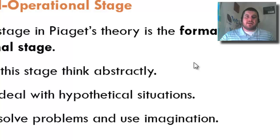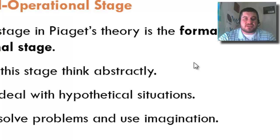The last stage, from age twelve and on, is the formal operational stage. People in this stage can think abstractly, deal with hypothetical situations, and solve problems using imagination — this is really when you begin to think like an adult. For example, given the rule 'if you hit a glass with a feather, the glass will break,' and told 'Don hit a glass with a feather,' a child in this stage concludes the glass broke because the rule says so.